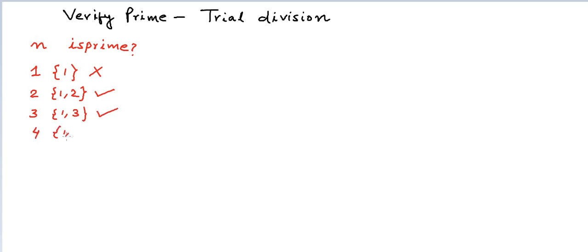Four can be divided by one, two and four. This is not a prime number. And we can go on. So the smallest prime number is two.